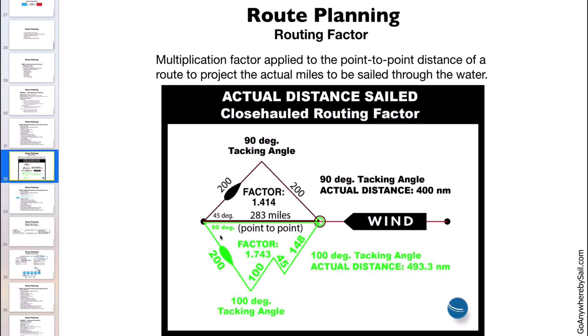If you sail 50 degrees off the wind, you'll have a 100 degree tacking angle. A 100 degree tacking angle means your actual distance through the water is going to be 493.3 nautical miles, and that is on a point-to-point of 283.